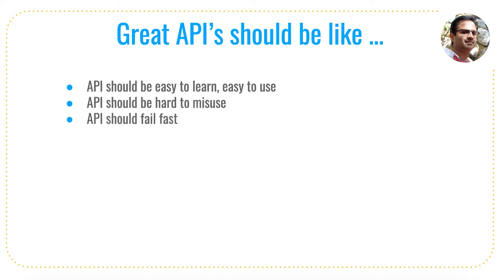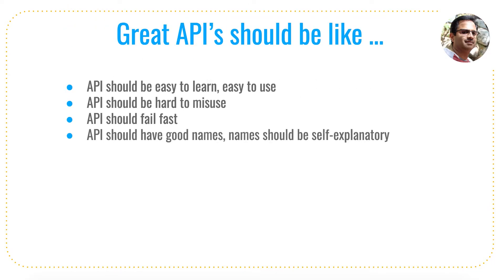The next one is: an API should fail fast. Let's say you have a method with hundreds of lines and the API fails at the 95th or 96th line. There is no reason to go all the way to line 95 before failing. It has to fail as early as possible. Failing at compile time is much better than failing at runtime. You have to be very clear — the API should fail fast to make sure it is perfectly utilized.